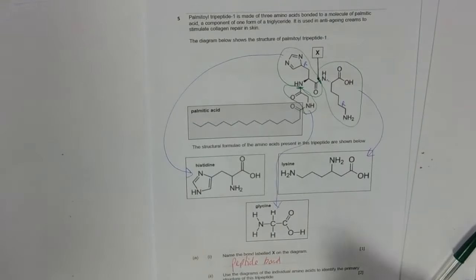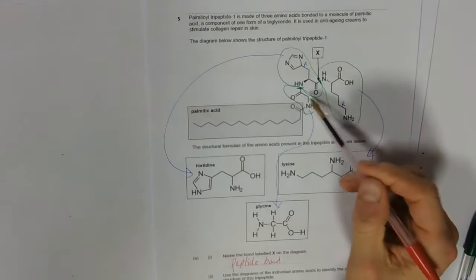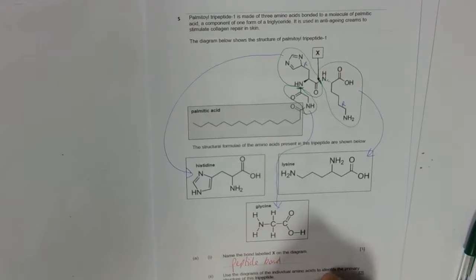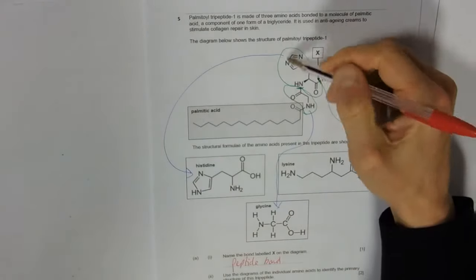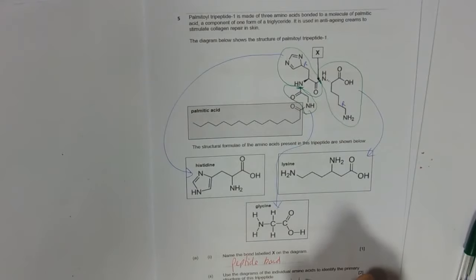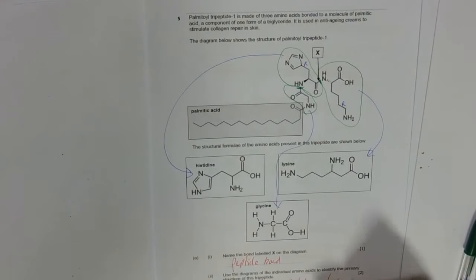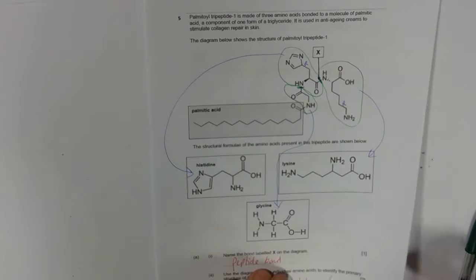So our answer is palmitic acid, glycine, then it's this one which is histidine, then the last one is lysine. Quite tricky that.